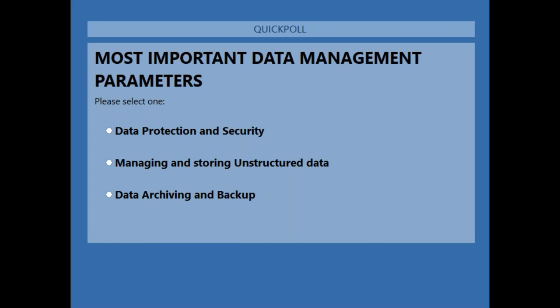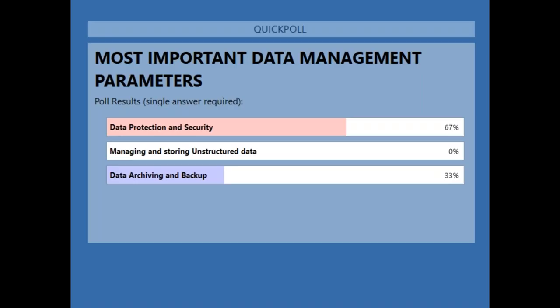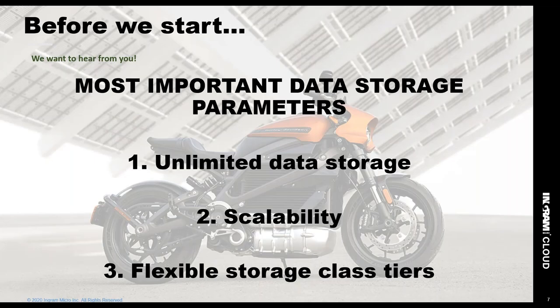We have some further important parameters for data management. With unstructured data becoming a large part of many workloads, the question is: is the most important factor data protection and security, managing and storing unstructured data, or archival and backup capabilities? The result: data protection and security came out on top — very prevalent conversation. Every organization is seeing an increased amount of attacks, and data storage and backup is another key area.